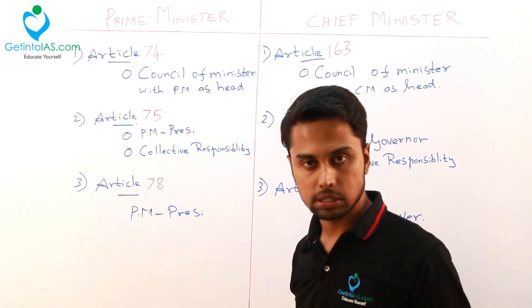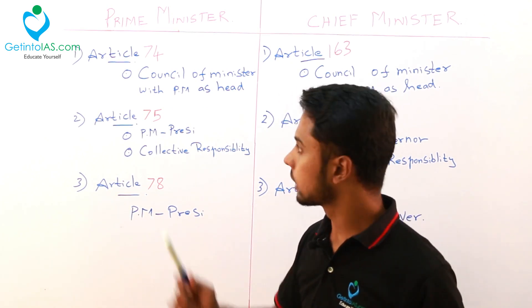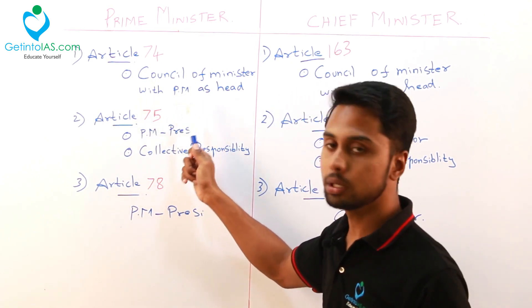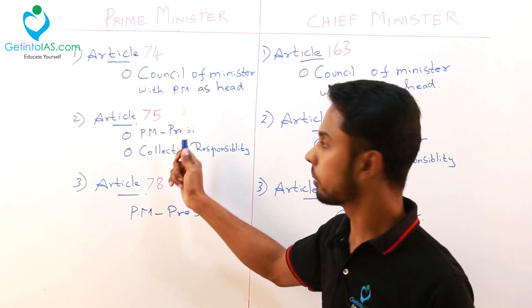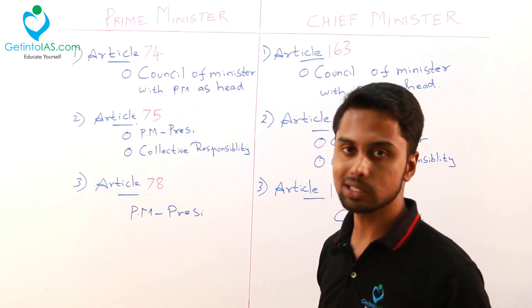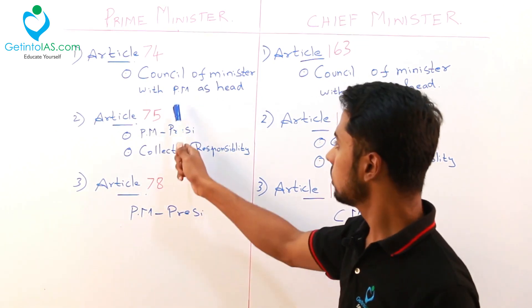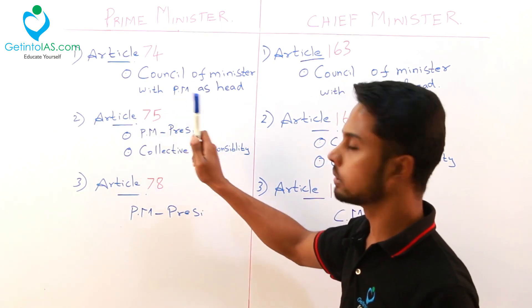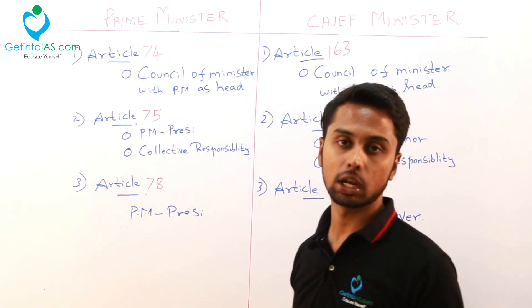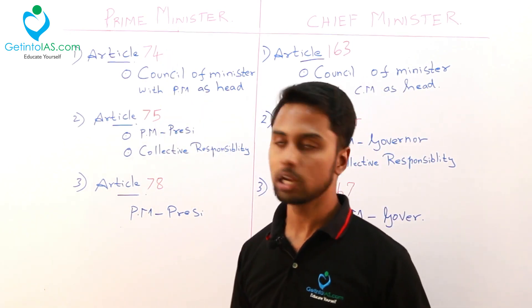There is a council of ministers, and the council of ministers is headed by the prime minister. The prime minister is the head of the council, which means that without the prime minister, the council of ministers cannot exist.